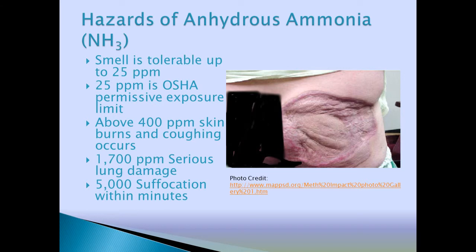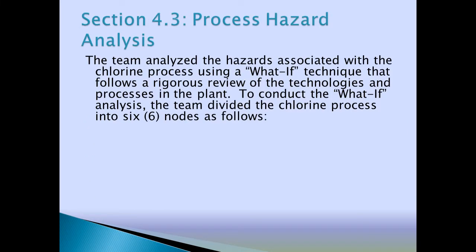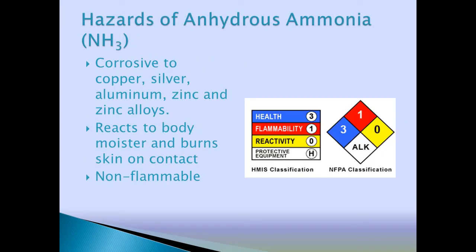At 1,700 parts per million it's serious lung damage, and at 5,000 ppm you can have suffocation within minutes of being in the presence of anhydrous ammonia. So if there's a bulk tank at your facility with anhydrous ammonia, chances are you're right at that 5,000 range, possibly. A 2,000 to 3,000 gallon tank would be on the lower side.